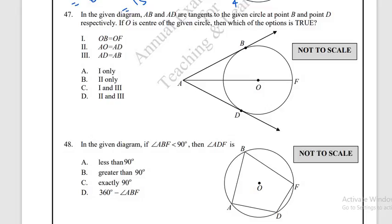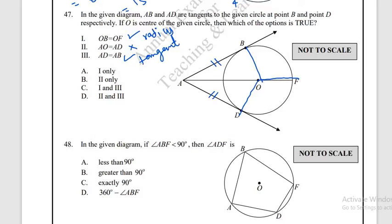Question number 47: AD and AB are tangents from point A to the circle with centre O. Which statements are true? OB = OF because both are radii. AO ≠ AD because AO is the hypotenuse. AD = AB because both are tangents from the same external point. Statements 1 and 3 are true. The correct answer is option C.